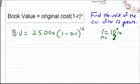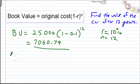So you can see over here we've already substituted it in: BV equals $25,000 times (1 - 0.1), so you convert it to a decimal, to the power of n. And then what you do is you just substitute that into your calculator. You should just be able to start at one side and move all the way across and not worry about the brackets or anything like that. So it's just $25,000 times bracket (1 - 0.1) - you have to make sure it's a decimal - and then raise it to the power of 12, and you'll get $7,060.74.